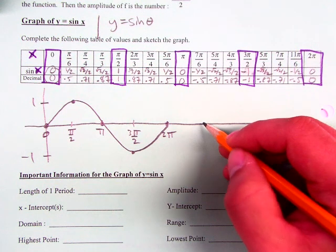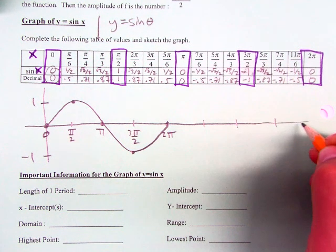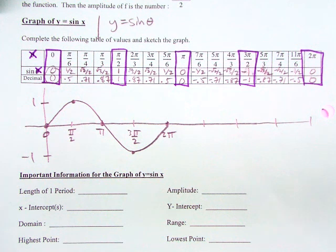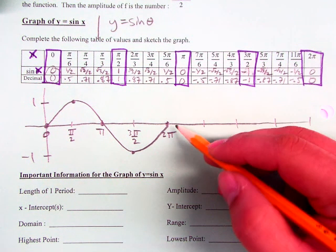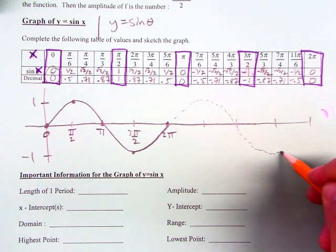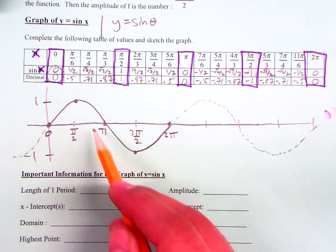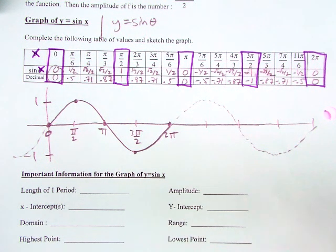Does everybody see how I got this? Now, you guys understand that this keeps going, right? We talked about this yesterday, how you can keep going around and around the unit circle. Just like we can keep doing that, this is going to repeat. And it also goes backwards. But the idea is that this is the sine graph.